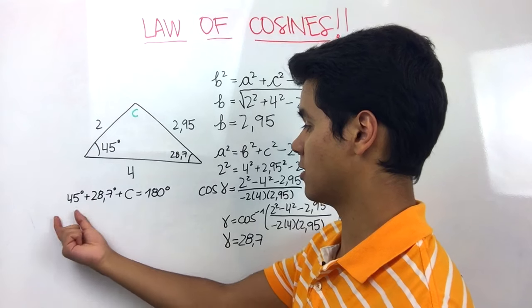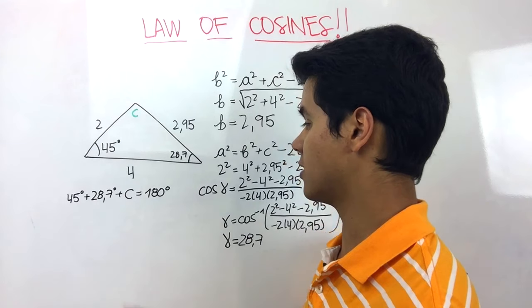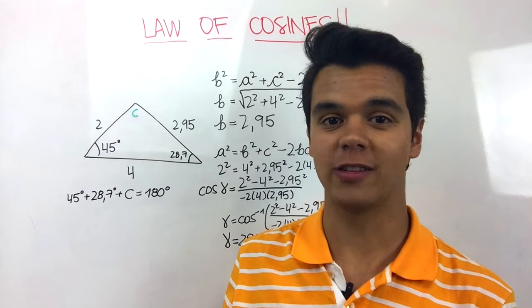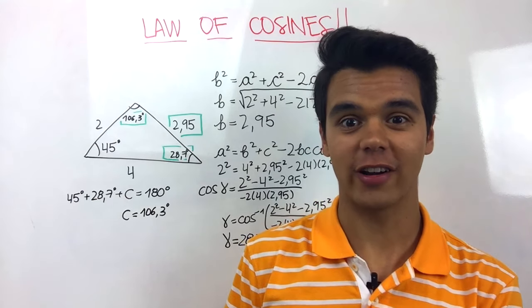If we take 180 minus these two angles, we're gonna find C. Doing this, we know that the angle C is equal to 106.3 degrees, and this is the solution for our example.